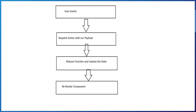Now let's understand the flow of useReducer. When an event occurs, a dispatch action is made. If the user clicks a button, they dispatch a function with an action and payload. This invokes a reducer function. The reducer function is a pure function which takes two parameters — the previous state and the action — and returns the new state. As the state is updated, a rerender of the component happens.